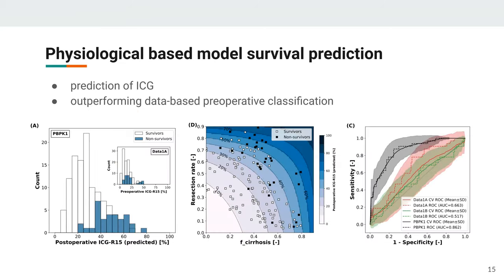Subsequently we coupled our SBML physiologically-based model to do classification. The model can predict post-operative liver function after a hepatectomy, and if we use this predicted postoperative liver function via the SBML model for classification, we perform much better than any clinical data measured before the hepatectomy. By using the SBML physiologically-based model we could outperform any data-based preoperative classification — this has clear applications for risk prediction after hepatectomy, and was in agreement with a lot of clinical data.